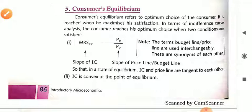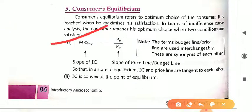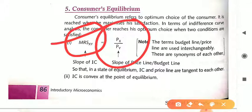If we think from an Indifference Curve point of view, there are two conditions which must be satisfied by a consumer to fulfill the condition of consumer equilibrium. The first condition is MRS of XY equals to PX upon PY. This MRS, which is the marginal rate of substitution of XY commodity, is basically the slope of the Indifference Curve. When the slope of the Indifference Curve equals PX upon PY — which is the slope of the price line or budget line — then we can say a consumer can reach the consumer equilibrium point. This is our first condition.